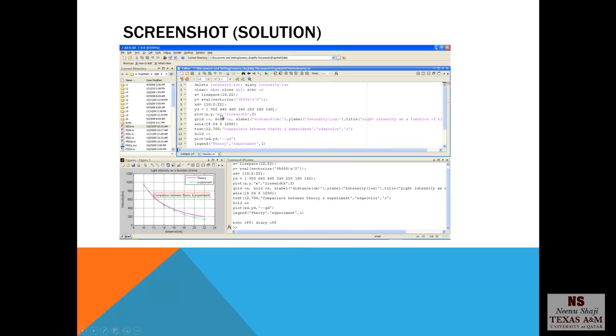Plot x,y as a magenta solid line with line width 2, grid on, hold on, xlabel, ylabel, title. Then you can choose the axis limits if you want. So you have the xmin, xmax and ymin, ymax. And we can also put a text say at the data point 12, 700 comparison between theory and experiment. You can give an edge color for the box. So that will be in red. Hold on. Plot xd, yd as a double dash green line connected with diamond markers. So legend will be theory, experiment as string and in position 1. That is the top right corner. So we see that there is a close relation between the theory and the experimental values.